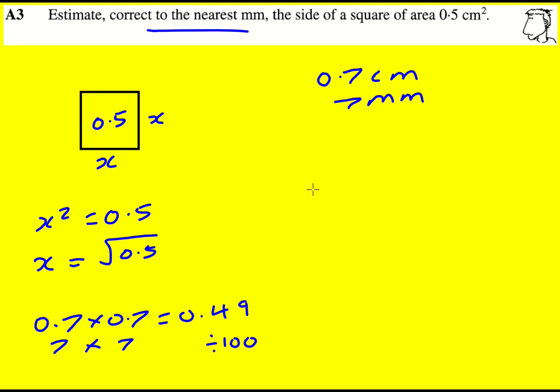An alternative way to do this question is to use the fact that one centimeter is 10 millimeters. One centimeter squared is then 10 squared millimeters squared, because you have to times by 10 in two different dimensions.